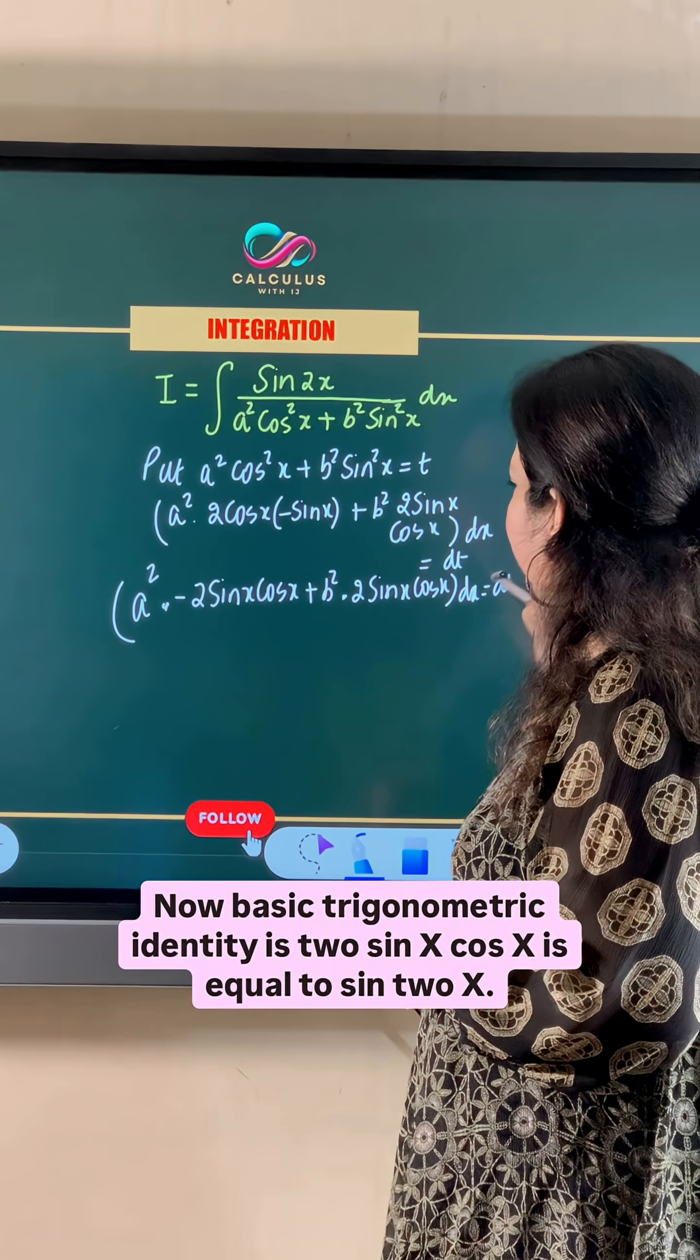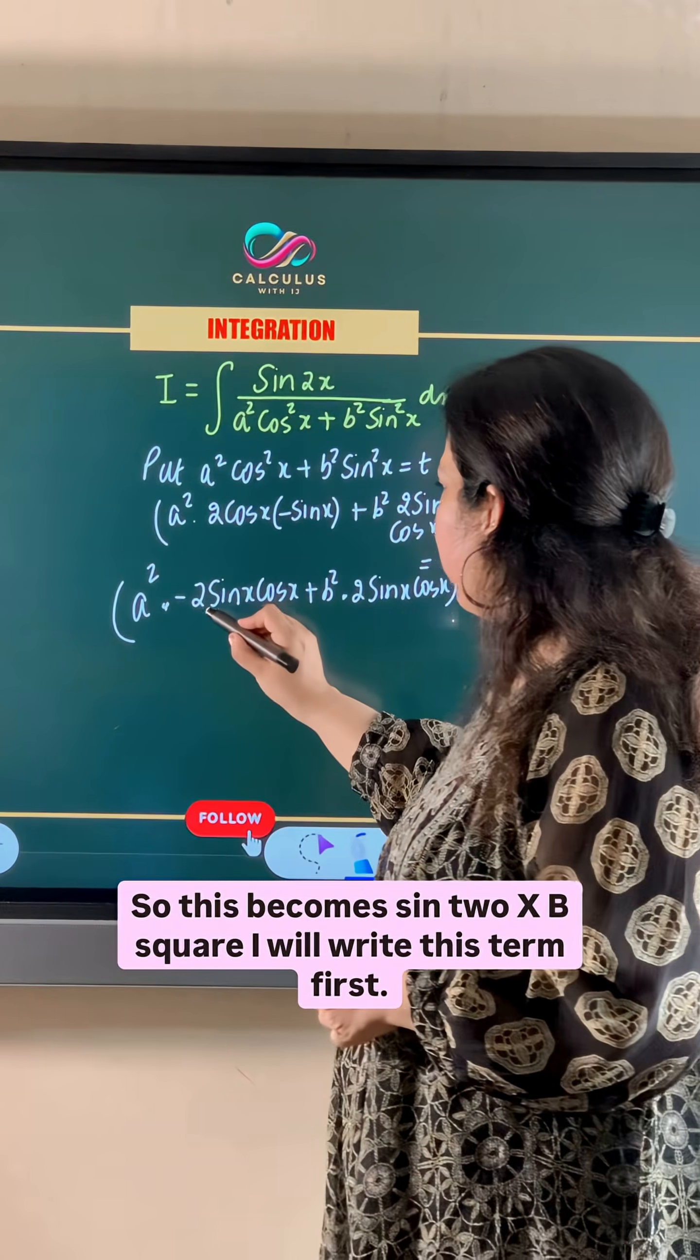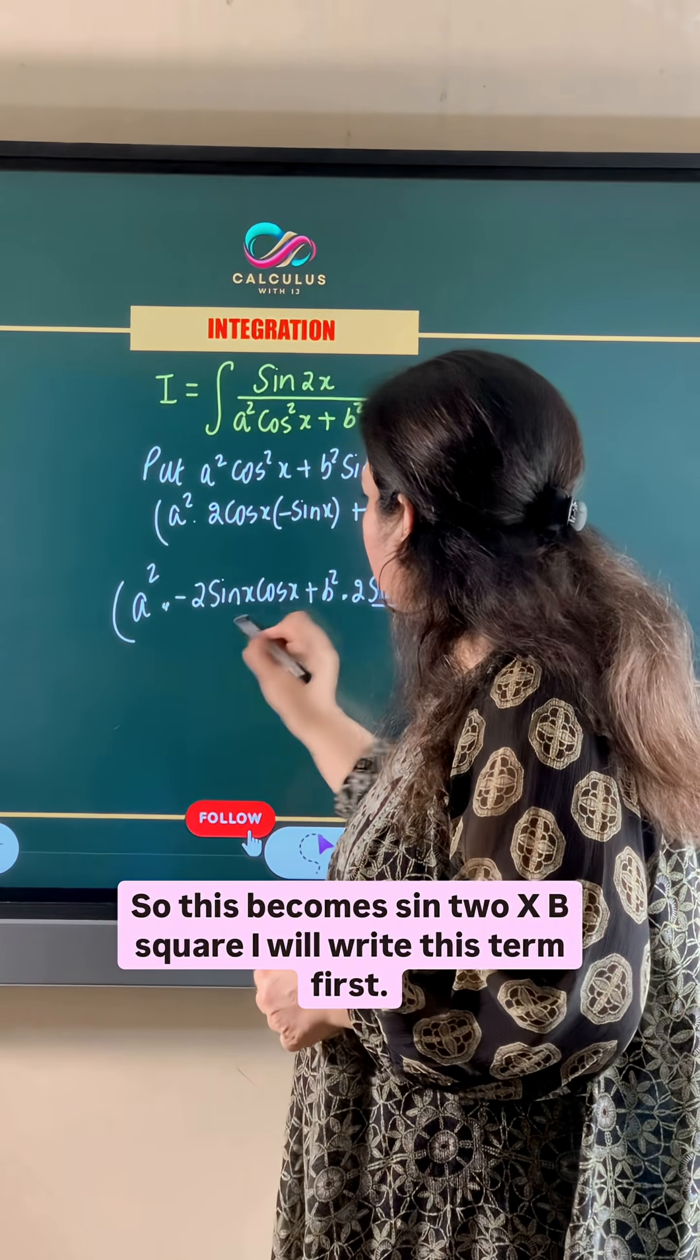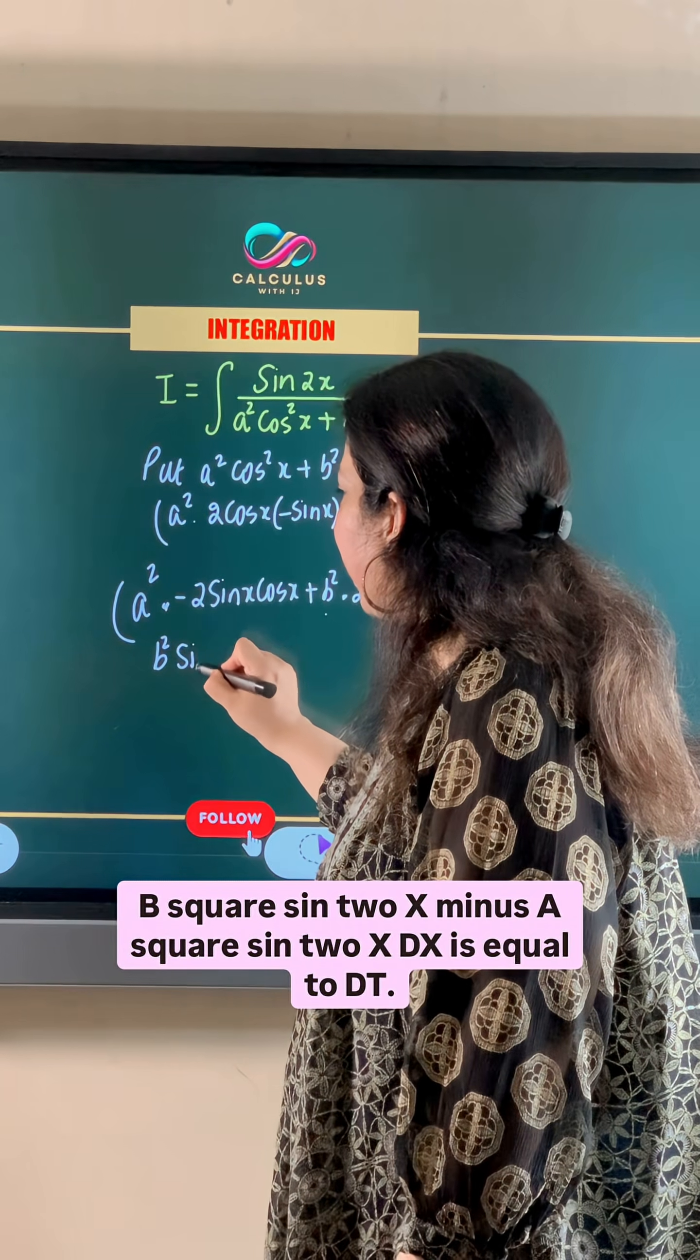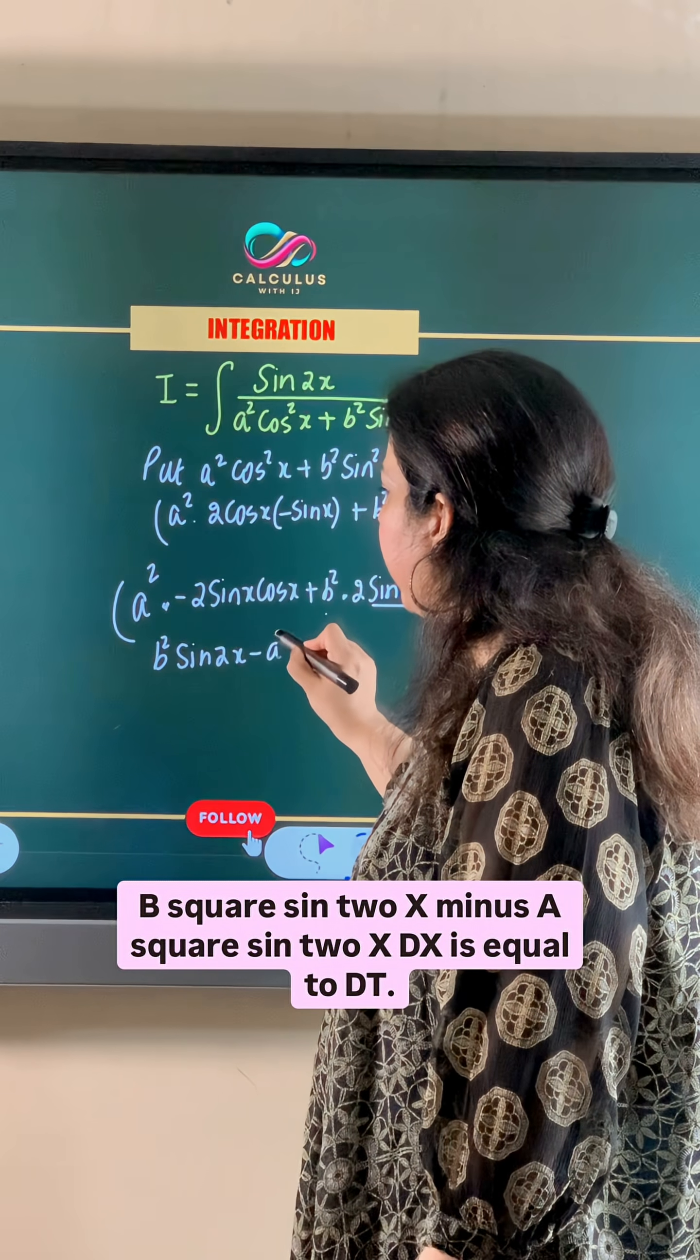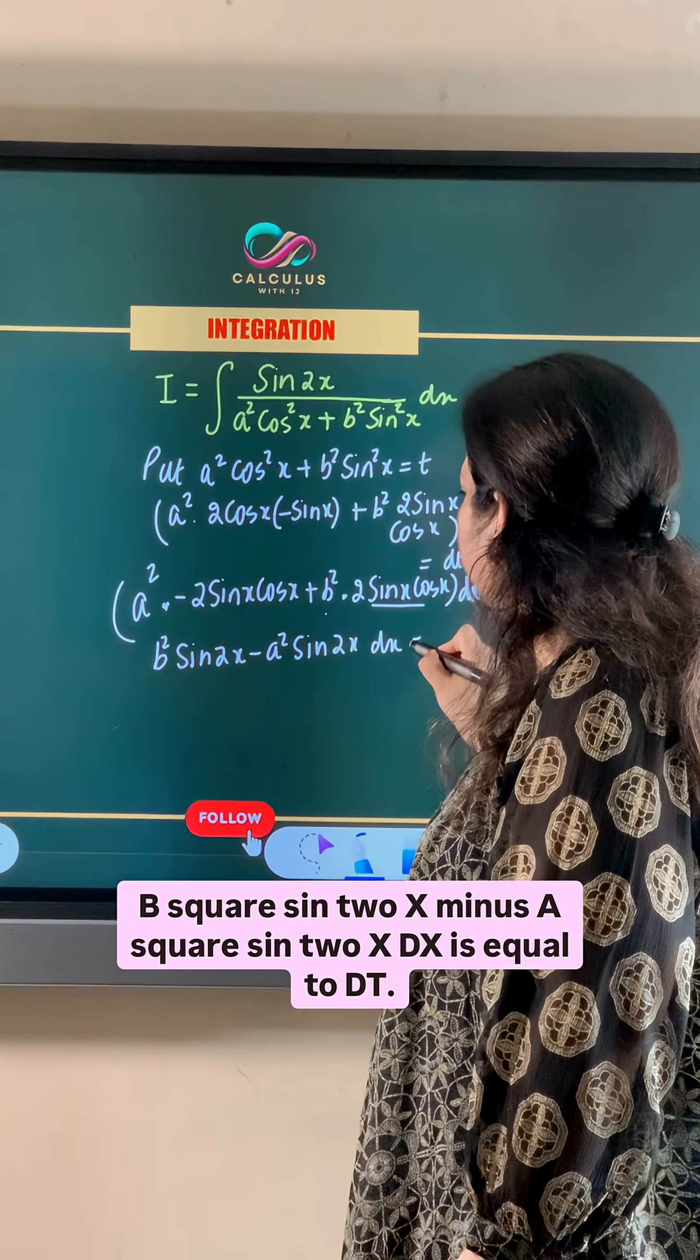Now basic trigonometric identity is 2 sin x cos x is equal to sin 2x. So this becomes sin 2x b square. I will write this term first. So b square sin 2x minus a square sin 2x dx is equal to dt.